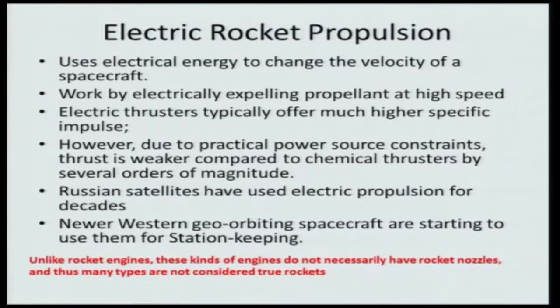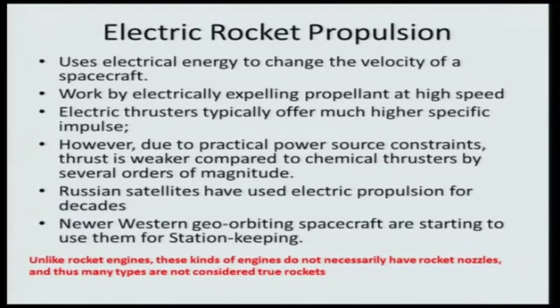However, the limitation is the practical availability of power. How much power is available to the system — due to this practical limitation or power source constraint, thrust is typically much weaker compared to chemical thrusters by several orders of magnitude. For instance, typical chemical thrusters produce tens of thousands of newtons of thrust, whereas electric systems typically produce less than 1 newton — in the range of milli-newton or micro-newton, or at most a few newtons.